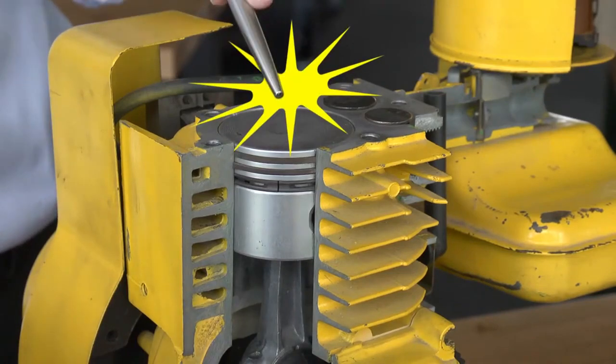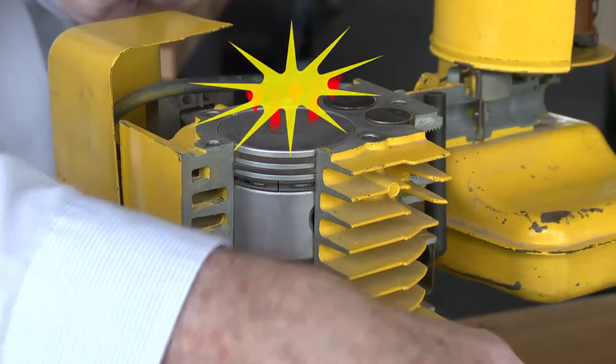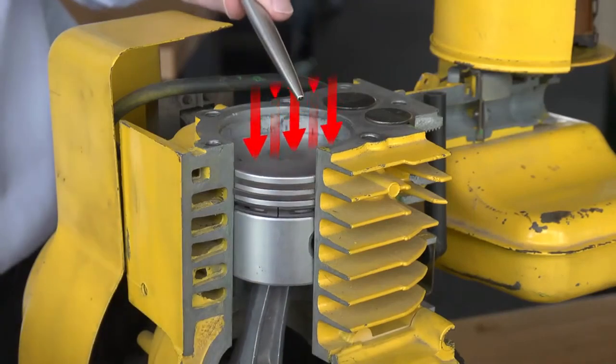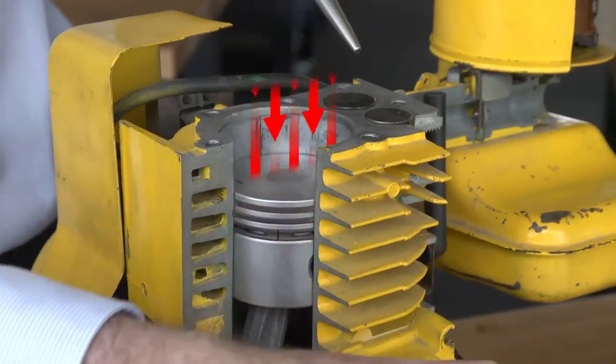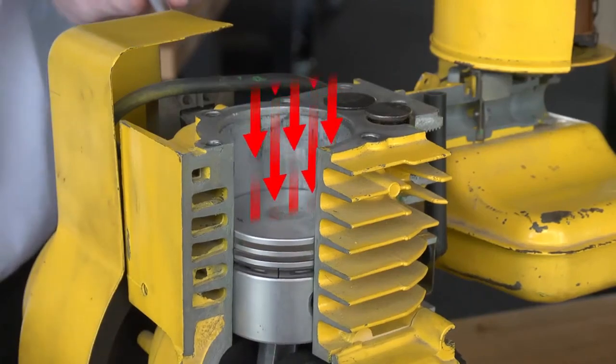At the end of the second stroke, the spark plug fires, igniting the air-fuel mixture, which drives the piston down. This is the power stroke. Both the inlet valve and the exhaust valve are closed.